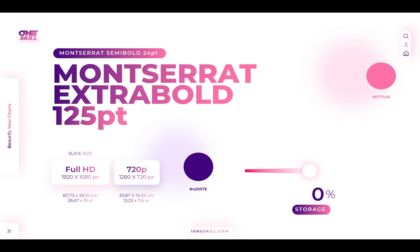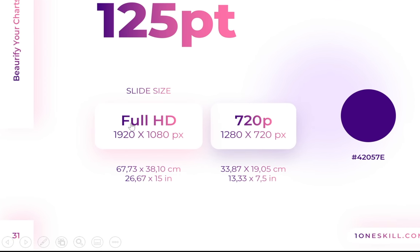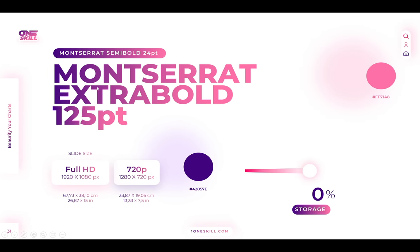Let's jump into PowerPoint. First, a little bit of information about colors and fonts: I'll be using the Montserrat font family — Montserrat Semi Bold for subtitles and Montserrat Extra Bold at 125 points for slide titles. Note that my slide size is set to full HD: 67.73 cm wide and 38.10 cm tall. That's why 125-point text looks normal here, whereas in a default 720p PowerPoint it would look super huge.